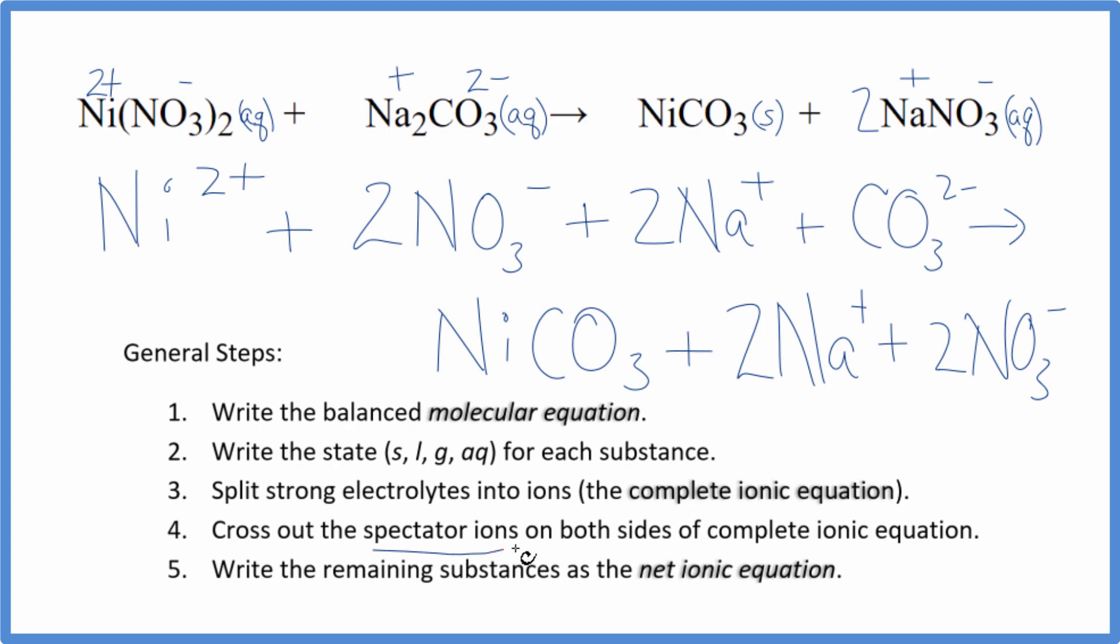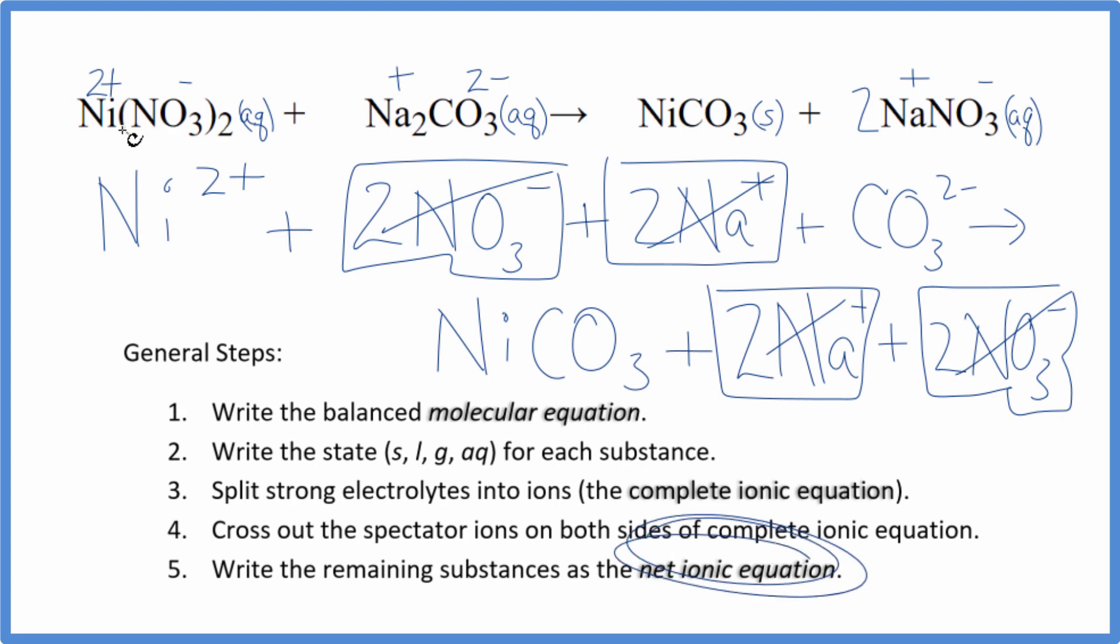Now we can cross out these spectator ions that are on both sides of our complete ionic equation. As I look at the reactants and the products, I see I have these two nitrate ions here in the reactants and in the products. So those can go. I have two sodium ions in the reactants and in the products. They can go. So what's left, that's the net ionic equation for nickel two nitrate plus sodium carbonate.